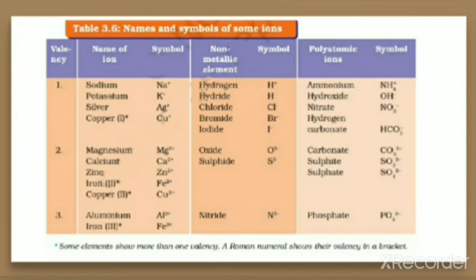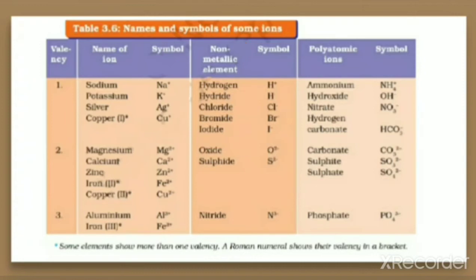Non-metals usually form negative charges, and those are called anions. Looking at the table, you can see non-metallic elements and their symbols: hydride (H⁻), chloride (Cl⁻), bromide (Br⁻), iodide (I⁻), oxide with a 2-negative charge, sulfide with a 2-negative charge, and nitride with a 3-negative charge. You need to remember the symbols along with their charges so that you can make formulas.